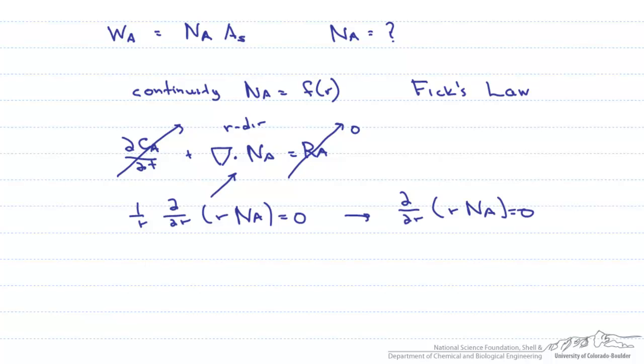When we integrate it, we find that N sub A equals a constant divided by R. Now that we have our flux as a function of R, we insert it into the Fick's Law equation.